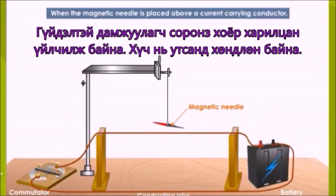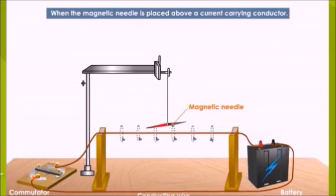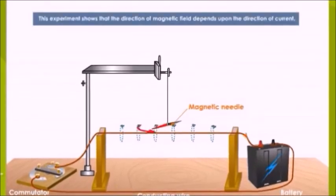He also observed that if the direction of the current in the wire is reversed, the deflection in the compass needle is also reversed. This experiment shows that the direction of the magnetic field depends upon the direction of current.